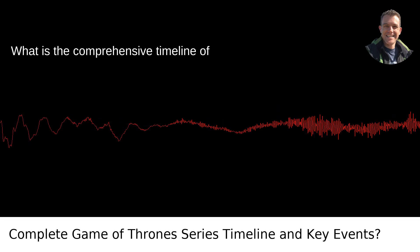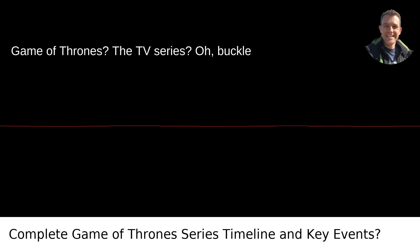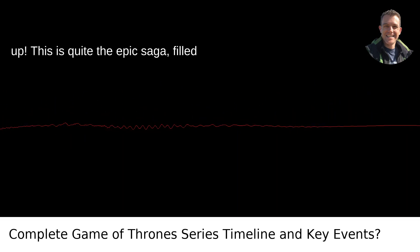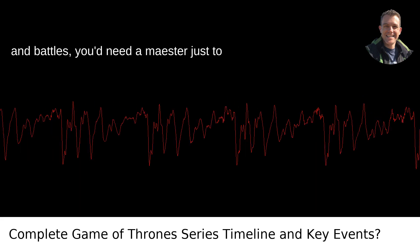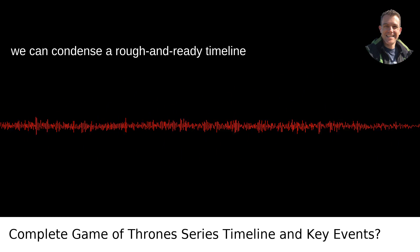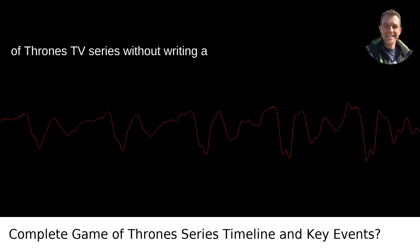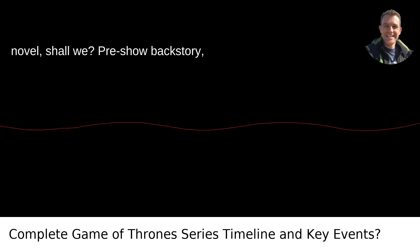What is the comprehensive timeline of people and events that have happened in Game of Thrones? The TV series. Oh, buckle up. This is quite the epic saga, filled with so many twists and turns, betrayals and battles. You'd need a maester just to keep the facts straight. But let's see if we can condense a rough and ready timeline of the key events and players for the Game of Thrones TV series without writing a novel, shall we?